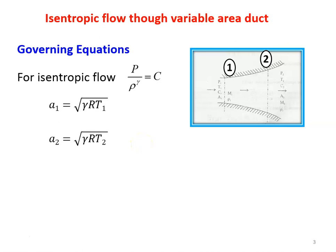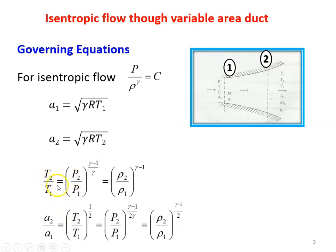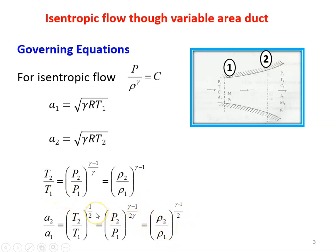The acoustic velocity a1 is the square root of Gamma R T1, and acoustic velocity at the outlet a2 equals square root of Gamma R T2. The relationship between inlet and outlet properties for isentropic flow: T2 by T1 equals P2 by P1 to the power (Gamma minus 1) by Gamma, which is also equal to Rho2 by Rho1 to the power (Gamma minus 1). And the acoustic velocity ratio a2 by a1 equals T2 by T1 to the power 1 by 2, which equals P2 by P1 to the power (Gamma minus 1) by 2 Gamma, and Rho2 by Rho1 to the power (Gamma minus 1) by 2.